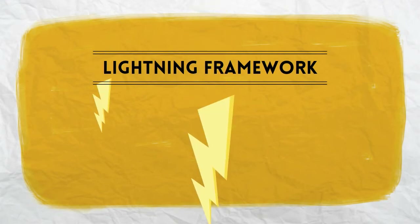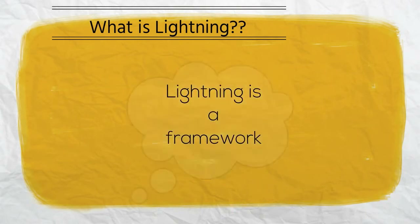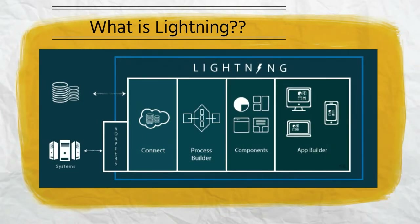Lightning is a framework which is based off of a component model which helps to build our apps faster. In layman terms, the Lightning framework basically puts together different components which result in faster app development because you are reusing the existing components.